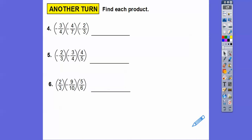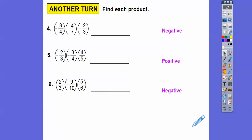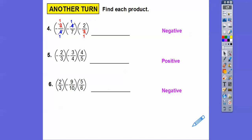Let's check the signs on these problems. The first one has three negatives — that's odd — so the answer is negative. Then cross-cancel the fours to make ones, and the threes cancel too. We're left with negative one times one times two on top, and one times seven times one on bottom: negative two sevenths.